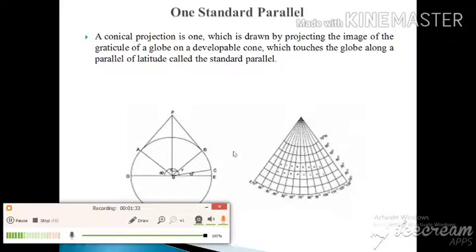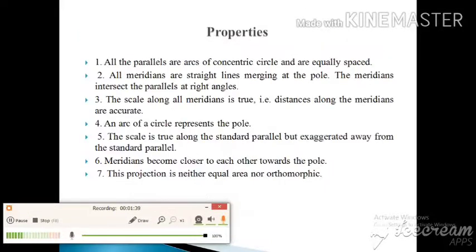This is one standard parallel conical projection. Properties of one standard parallel: All the parallels are arcs of concentric circles and are equally spaced. That means the arcs of a circle will be equally spaced.